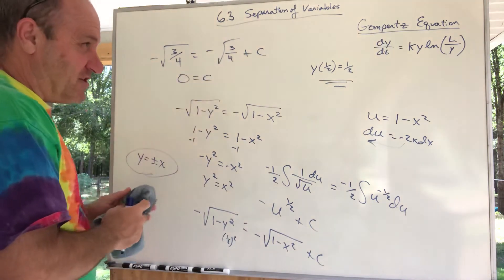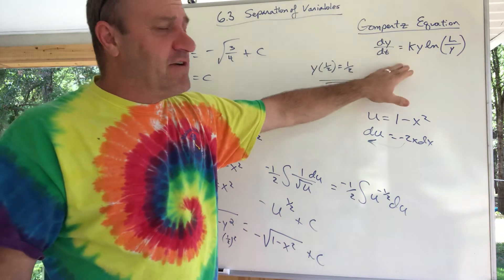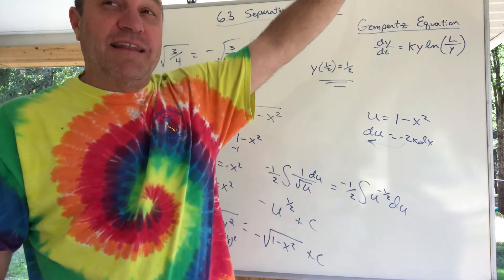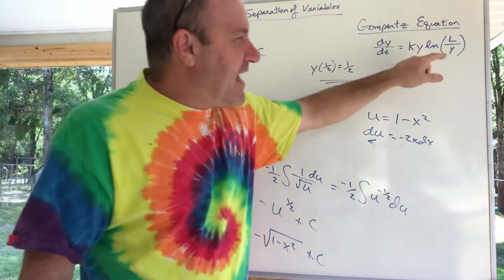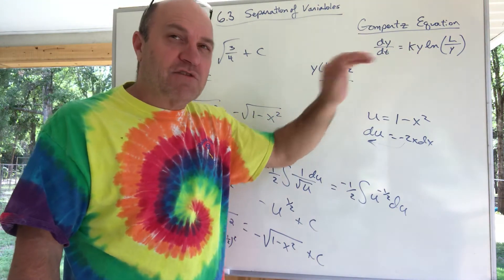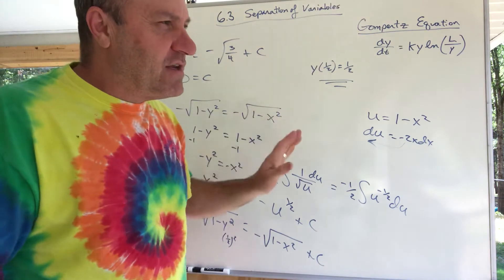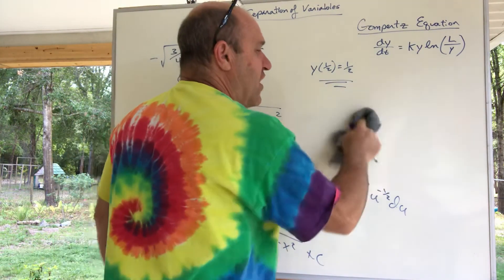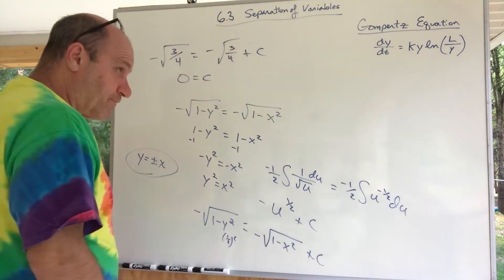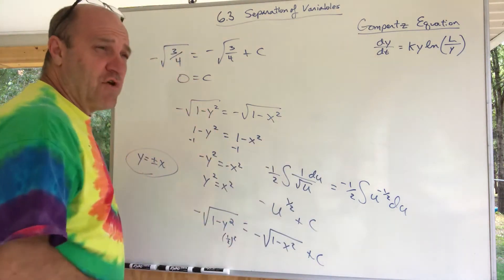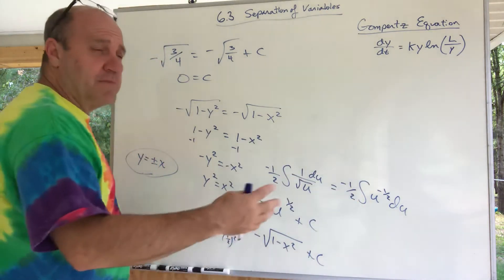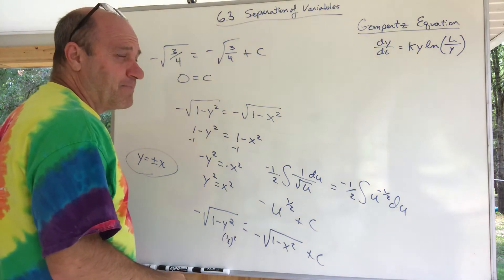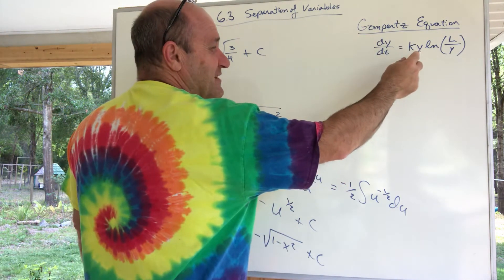Let's try to solve the Gompertz equation. This is another example from section 6.3 — it's a model of population growth, but different from unlimited growth. The population grows toward a limit L, called the carrying capacity of the environment. The population does not have unlimited growth; it approaches L. You can see this when you graph the solution to the differential equation. This equation is used in population growth problems, tumor growth problems, economics problems, and life insurance problems — that's apparently where Gompertz derived it.